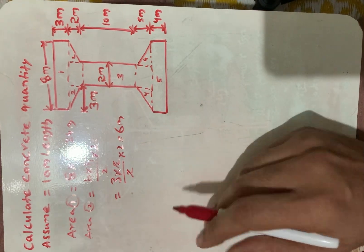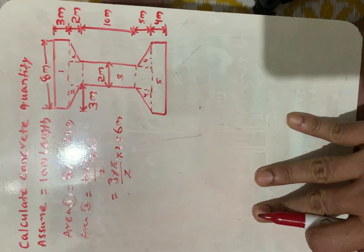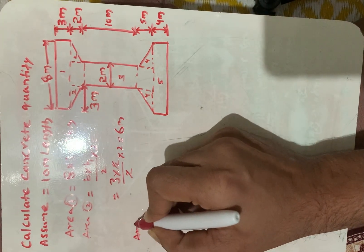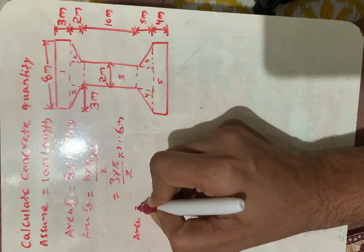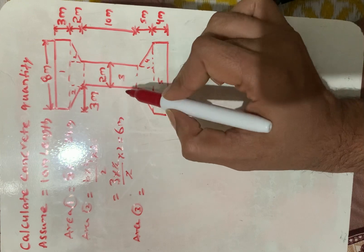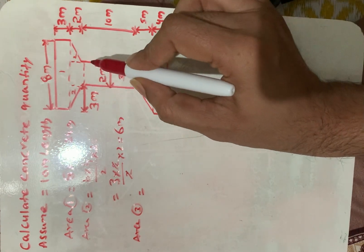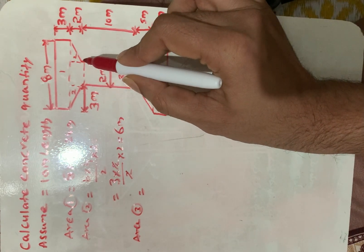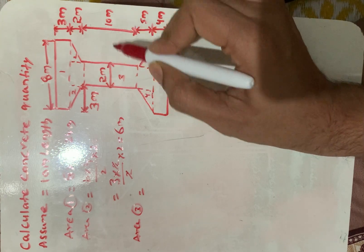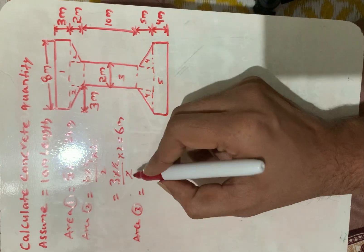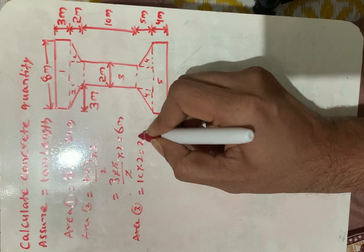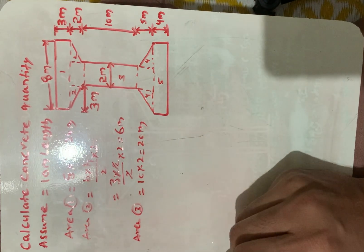Next, section 3. This is also a rectangular section. The length of this section is 10 meters and the width is 2 meters. So 10 × 2 = 20 square meters.